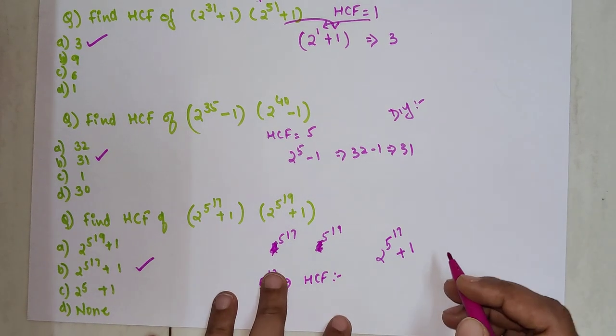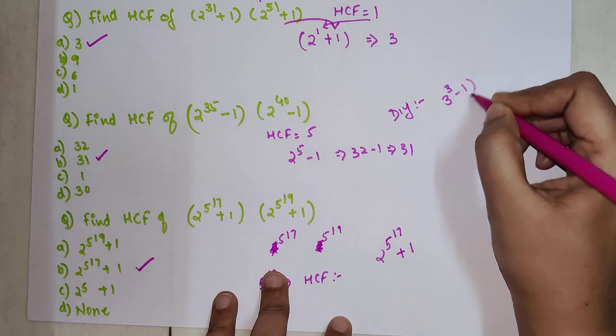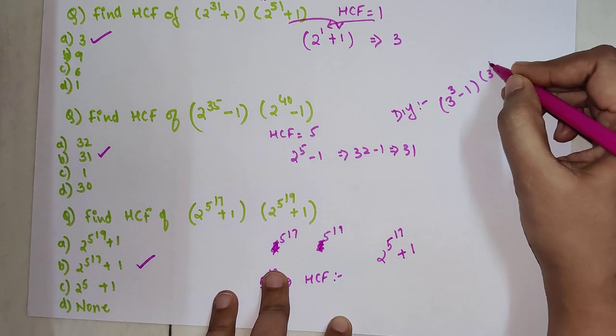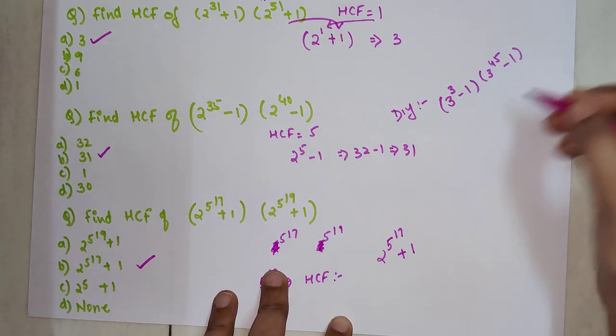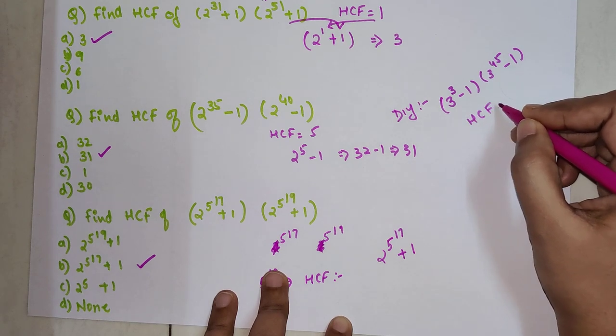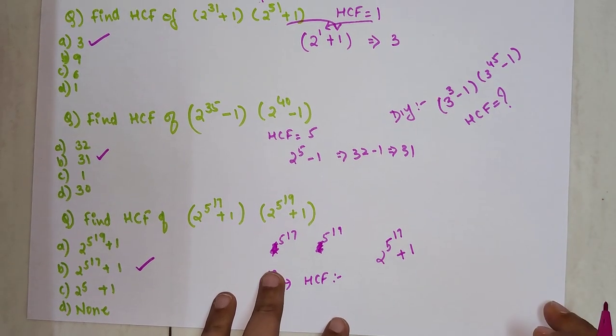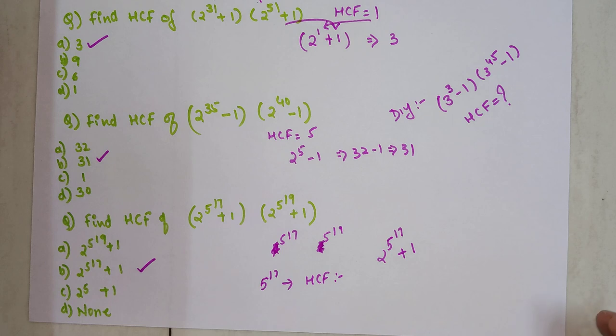Now time for your DIY. I have 3^3 - 1 and 3^45 - 1. You need to tell me what is the HCF. Do let me know your answers in the comment section.